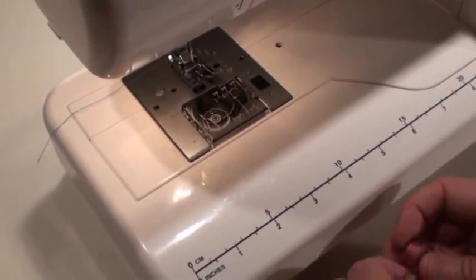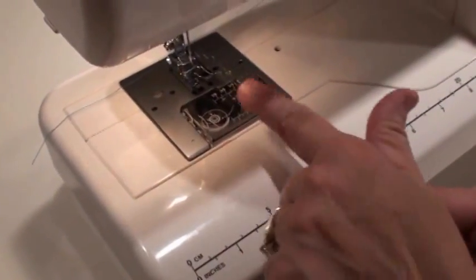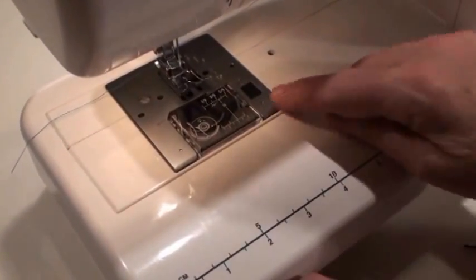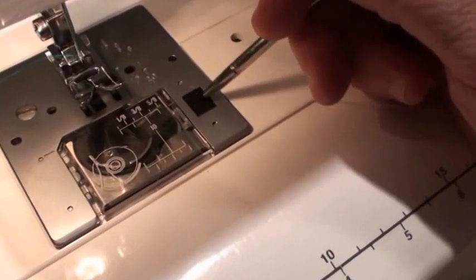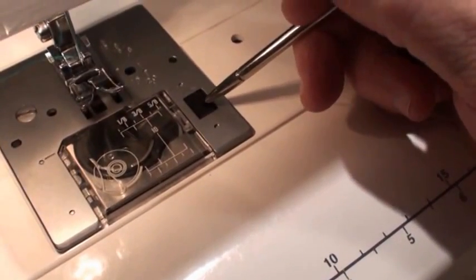Okay, we're not really done yet though. We've threaded the top of the machine, but now we need to thread the bobbin. To do that, notice here, there's this little black button. It's called the hook cover release button.